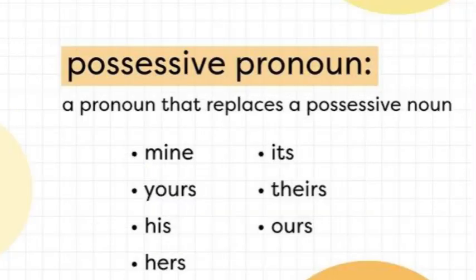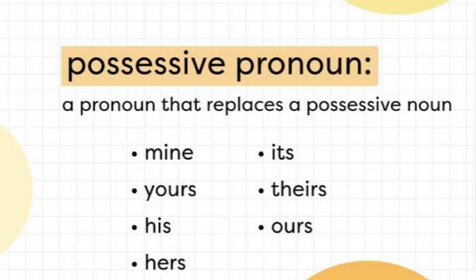Pronoun کی second type ہے possessive pronoun۔ 'Possessive' کہتے ہیں ملکیت کو، ownership کو۔ جب آپ کسی چیز سے ملکیت یا association ظاہر کرتے ہیں تو possessive pronoun استعمال کرتے ہیں۔ اس کی definition: 'a pronoun that replaces a possessive noun'۔ مثال کے طور پر 'my book' کی جگہ 'mine' لگا دیتے ہیں، 'your book' کی جگہ 'yours'۔ 'His book'، 'hers' — یہ سارے possessive pronouns ہیں۔ اسی طرح 'its'، 'theirs'، 'ours' بھی possessive pronouns ہیں۔